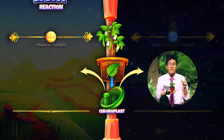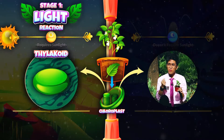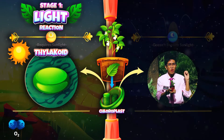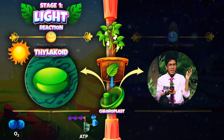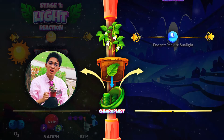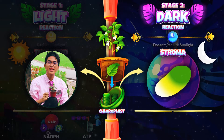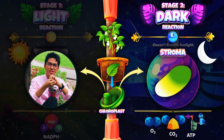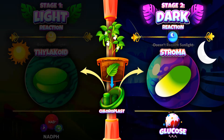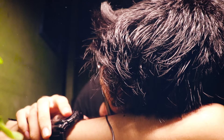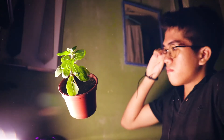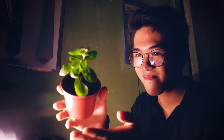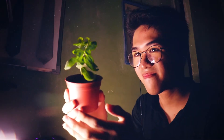To recall: the light reaction occurs in the chloroplast thylakoids, producing oxygen, ATP, and NADPH. Then the dark reaction in the stroma uses these products and carbon dioxide to produce glucose. Photosynthesis can teach us not only to look on the bright side, but also to pursue greatness even in the absence of light.